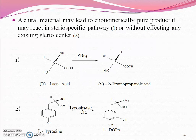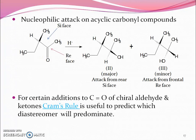A chiral material may lead to an enantiomerically pure product. It may react in a stereospecific pathway — for example, lactic acid (R) can be converted into S-2-bromopropionic acid. L-tyrosine can be converted into L-dopa by the enzyme tyrosinase. For nucleophilic attack on acyclic carbonyl compounds, the major product forms when the attack takes place from the rear (Si face) and the minor product forms when attack occurs from the front (Re face).